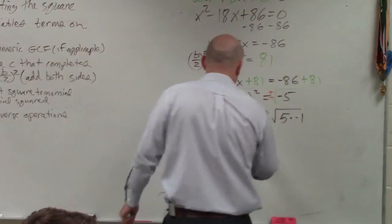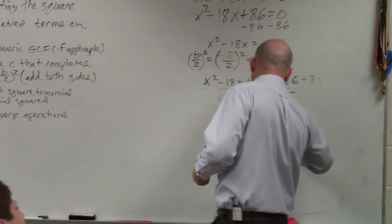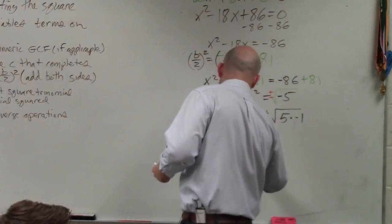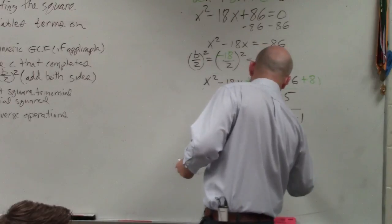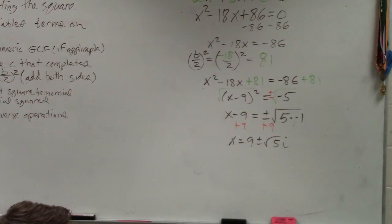And then I can just add the 9 to both sides. So my final answer is x equals 9 plus or minus the square root of 5i. And those would be my two solutions. Anybody have any questions on that?